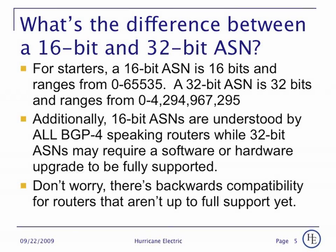What's the difference between a 16 and 32-bit autonomous system number? Other than the obvious number of bits and corresponding numeric range, 16-bit autonomous system numbers are understood by all BGP-4 speaking routers, while 32-bit AS numbers may require software or hardware upgrades to be fully supported. Most recent software does actually support them. However, there is backwards compatibility for routers that are not up to full support yet.